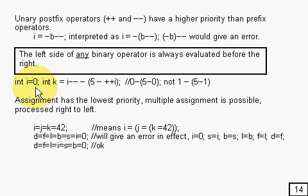So if you have something like this, i equals 0, int k equals i minus minus minus 5 minus that. It gets interpreted as follows if you see, i equals 0, so that would be 0 there.